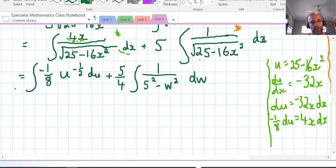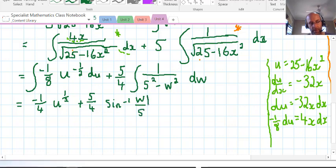Interesting, we've got two different variables, two different integration questions together. But a lot of the hard stuff's been done already. So let's go ahead and integrate that. We integrate the first one, we get negative 1/4 u to the 1/2, and the second term will be 5/4, and that follows the pattern now where it's inverse sine or arc sine w over 5, plus C.